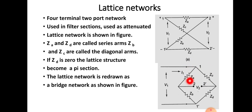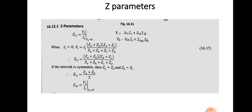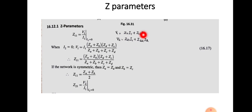We want to find the impedance parameters for this lattice network. The impedance parameters are obtained from the equations V1 and V2 in terms of I1 and I2: V1 = Z11·I1 + Z12·I2, and V2 = Z21·I1 + Z22·I2. To find Z11, we set I2 = 0, which makes the second term zero, giving Z11 = V1 / I1. Similarly, when I2 = 0, we can find Z21 = V2 / I1.